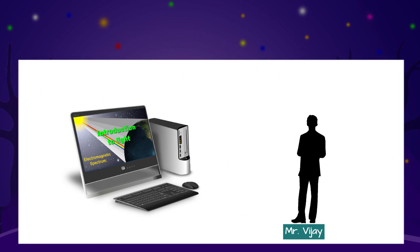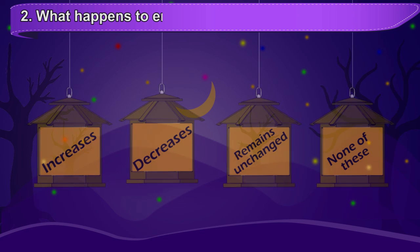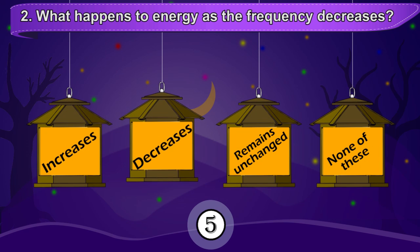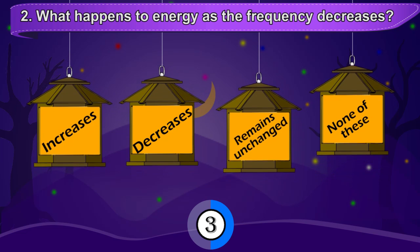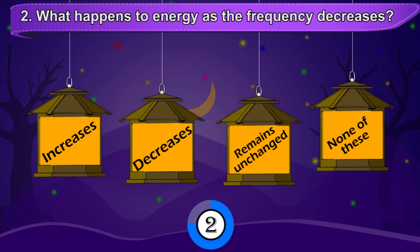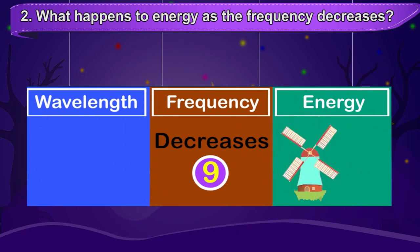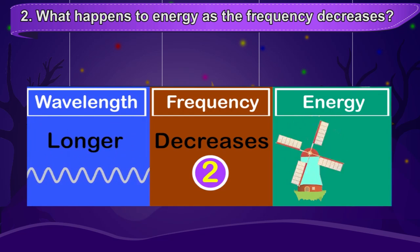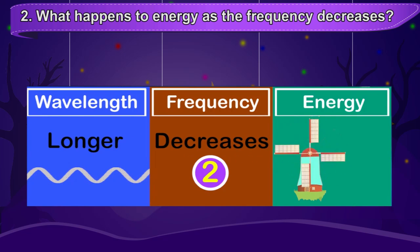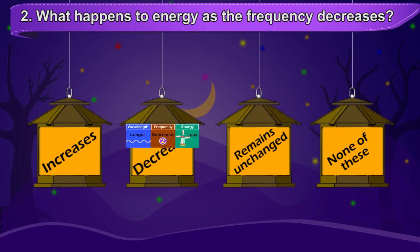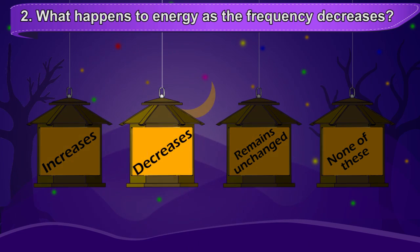Mr. Vijay has a few doubts regarding the topic. Help him out by selecting the correct option. What happens to energy as the frequency decreases? As the frequency decreases, the wavelength increases. And as the wavelength increases, the energy decreases too. So as the frequency decreases, the energy decreases.